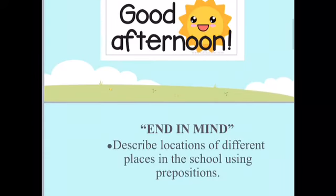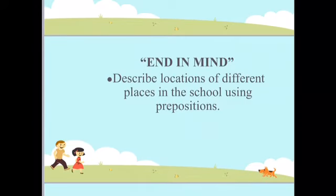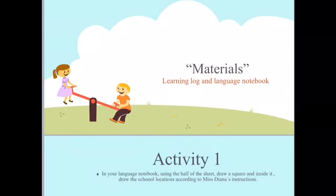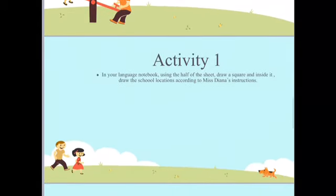Good afternoon. The aim for this class is to describe the locations of different places in the school using prepositions. Our agenda for the day is to draw school locations — Tommy's school cafeteria — using prepositions and the available activity. Our materials for this class are your learning log and your language notebook. Let's begin Activity One.